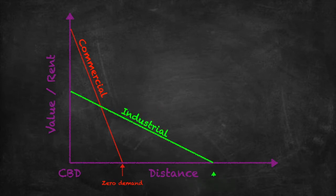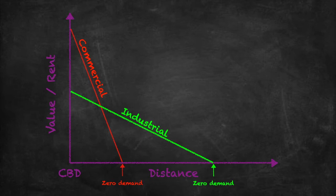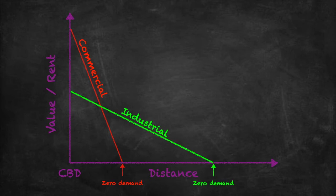The second land use is industrial land. Industrial land doesn't want to be in the CBD because it needs space. Because commercial land has such great demand on that space, industrial users are not prepared to pay the kind of prices that commercial businesses pay, so they start off with a lower bid. There's a certain point at which it becomes unprofitable for them to be that distance from the CBD, because transport costs to move goods all the way to the CBD become too high.